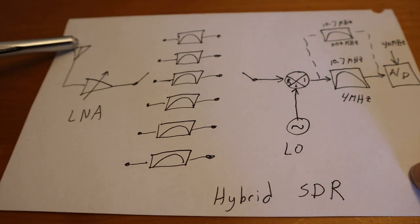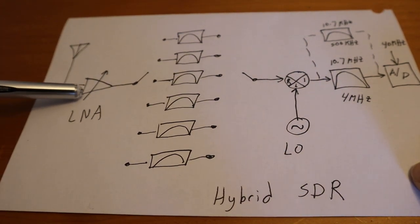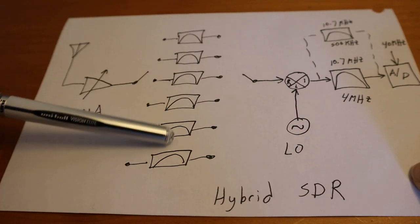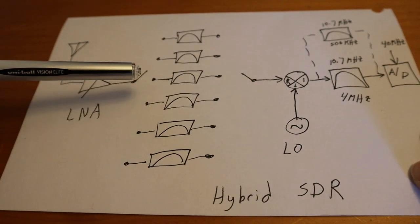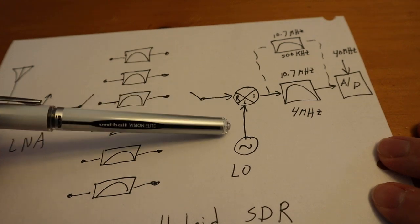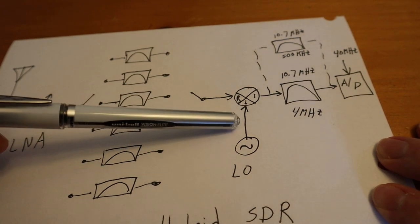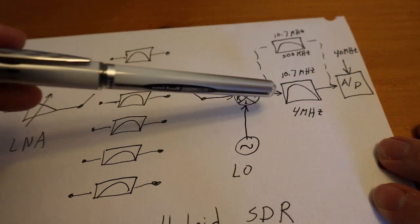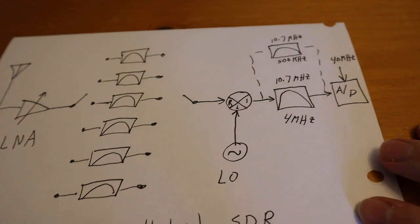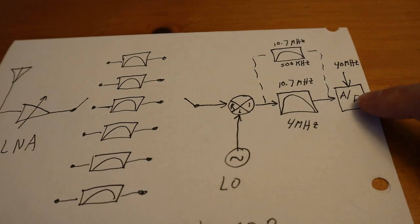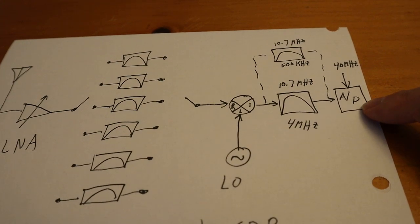So here we still got our antenna coming in, you got your low noise amplifier. Still need to have your switch banks, the filters, based on what you want to tune. But now we'll put a mixer here and we'll tune the frequency that we want to receive up to this 10.7 megahertz, and that's what we'll digitize with this 40 megahertz A to D.